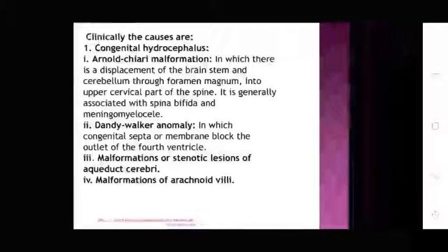Causes of congenital hydrocephalus include Arnold-Chiari malformation, in which there is displacement of the brain stem and cerebellum through the foramen magnum into the upper cervical part of the spine. It is generally associated with spina bifida and meningomyelocele. Dandy-Walker anomaly involves a congenital membrane blocking the outlet of the fourth ventricle, and there are also malformations and stenotic lesions of the aqueduct of Sylvius.